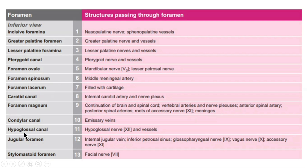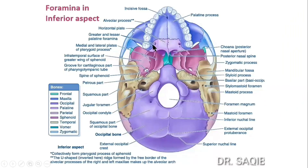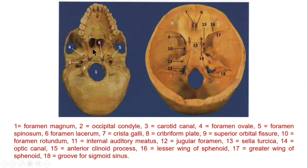The condylar canal passes emissary veins. The hypoglossal canal passes the hypoglossal nerve and vessels. The jugular foramen passes three cranial nerves — nine, ten, and eleven. The stylomastoid foramen passes the facial nerve. You can see the anterior, middle, and posterior parts of the norma basalis, including the occipital condyle. This is a small challenge for you with structures labeled and a key provided.